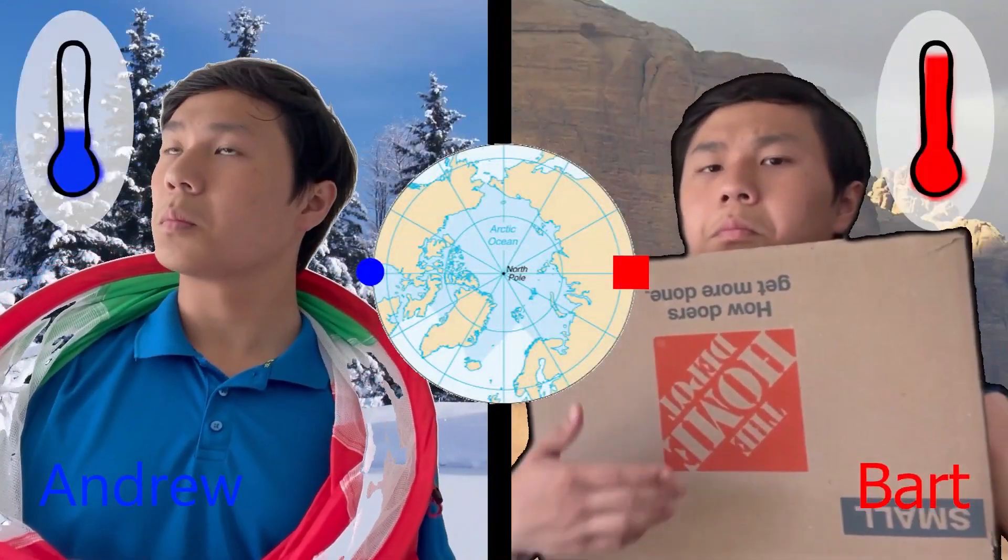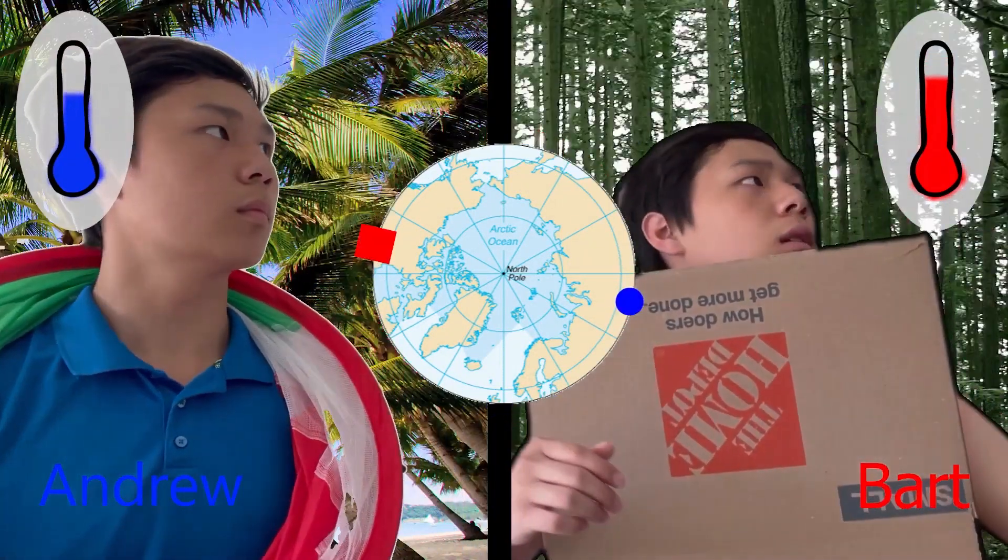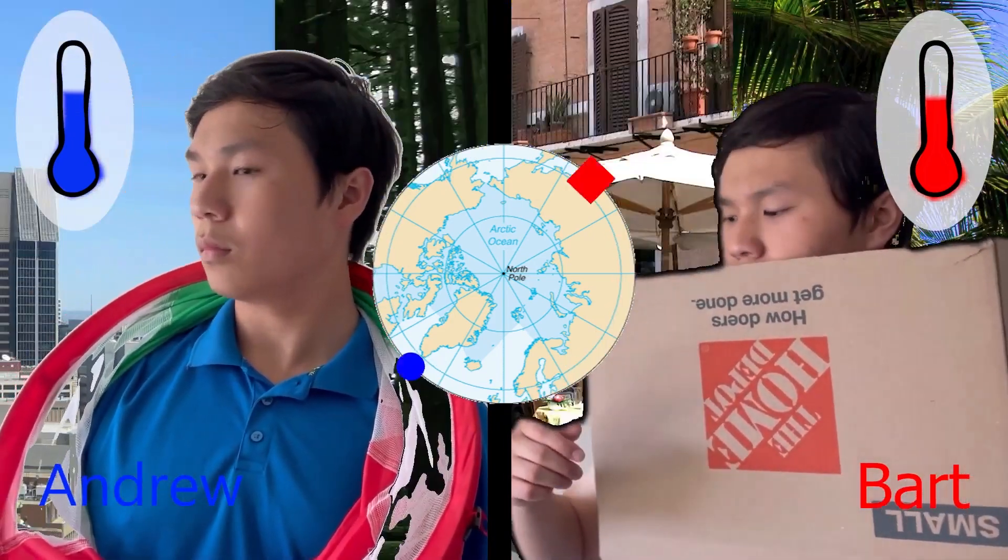Each friend feels a certain temperature, and Borsak-Oolem Theorem states that somewhere on the circle, if the two friends are at opposite points, they will feel the same temperature.